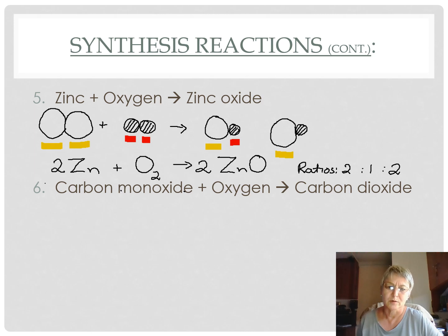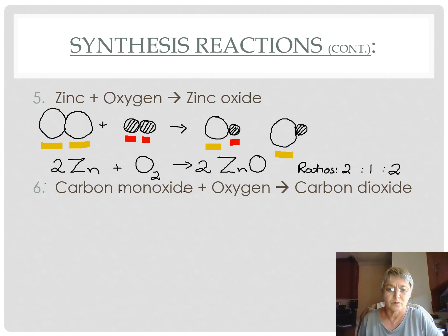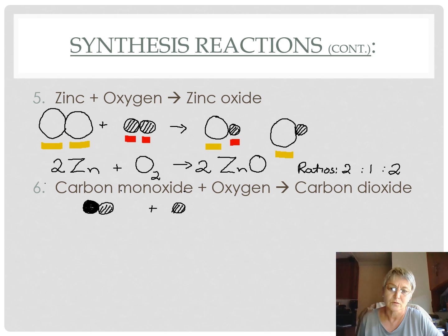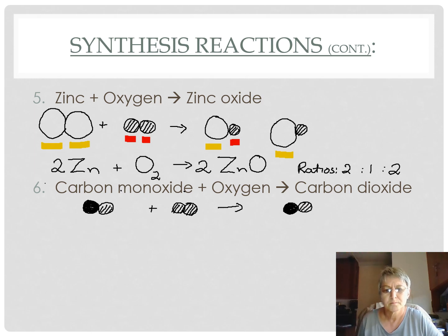Example six is carbon monoxide reacting with oxygen to make carbon dioxide — two substances making one. Carbon monoxide has one carbon atom joined to one oxygen atom. Carbon and oxygen are in the same period, so we draw them the same size. It reacts with oxygen, which is a diatomic molecule, and produces carbon dioxide where the carbon is joined to two oxygens.